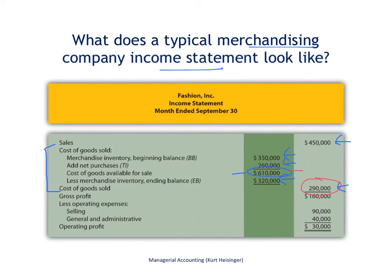If you think back to a manufacturing company, that was what we were calculating in the schedule of cost of goods sold — the cost of goods sold amount that appeared on the income statement. We see the same thing here but for a merchandising company. The rest of the income statement looks the same: we have gross profit, which is sales minus cost of goods sold, and then we subtract selling costs and general and administrative costs. In this example, $160,000 minus $90,000 minus $40,000 gives us operating profit of $30,000. The primary difference is that a merchandising company gets its inventory from outside companies, whereas manufacturing companies produce their own inventory.